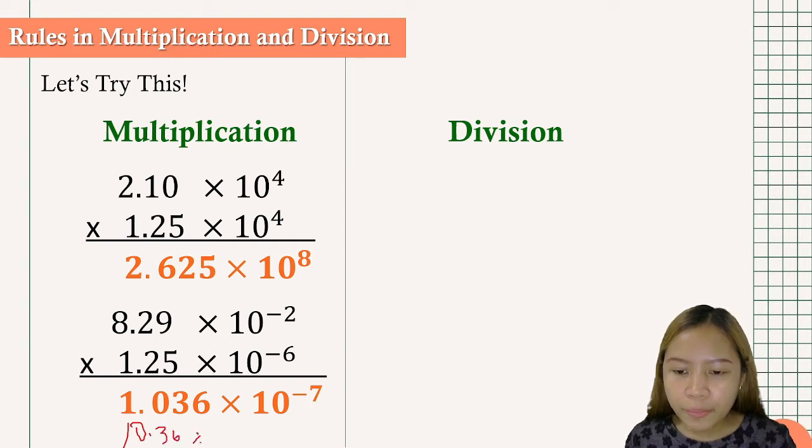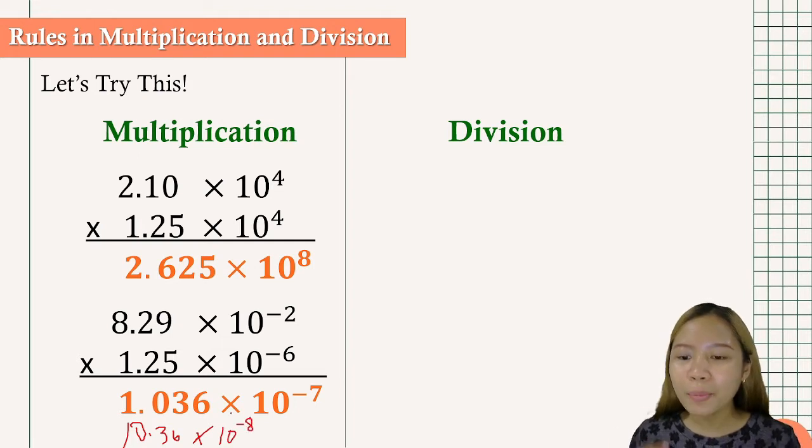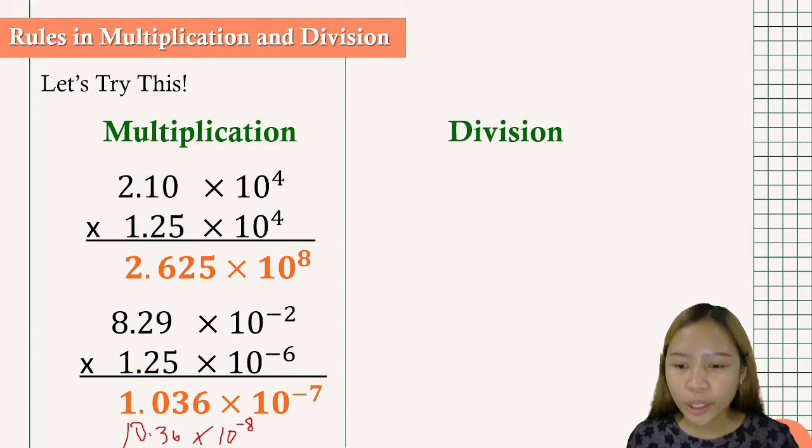And then we have times 10 to the negative 8. Now take note that we cannot have two whole numbers for our final answer. So we need to move one place going to the left, going to the left.